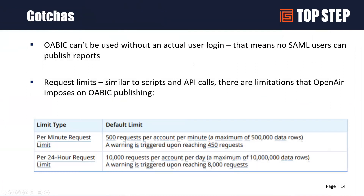A couple of gotchas. If you're using SAML — single sign-on — you're out of luck. If you use SSO to get to OpenAir, the Business Intelligence Connector is not going to work. You have to be able to log in directly to OpenAir. There is no support for single sign-on. That can be a big problem. However, if you are using SSO, administrators have the ability to turn it on and off for individual users, so you can still use the BI Connector under the username of someone who does not have single sign-on turned on.